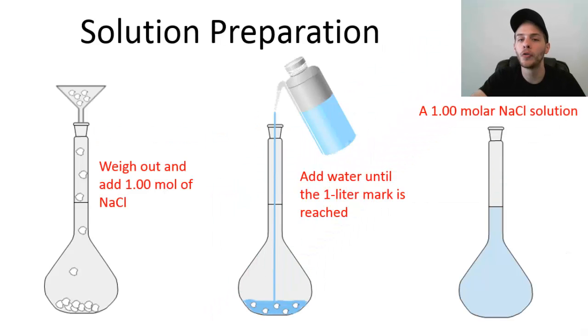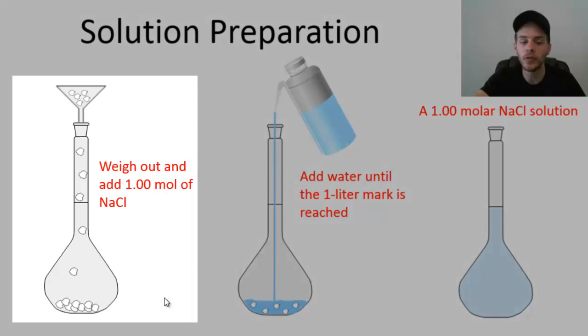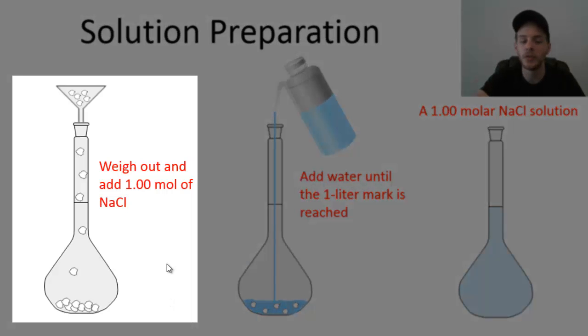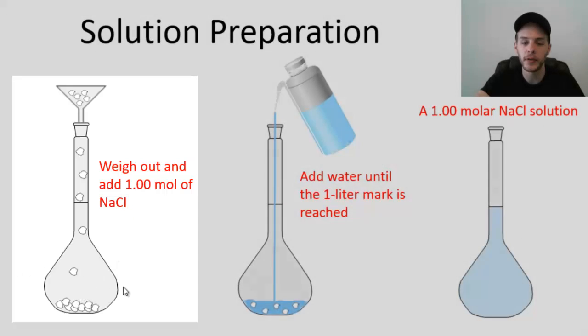So let's talk about how to prepare a solution of a specified molarity. Let's say we're trying to prepare a solution that has one mole of sodium chloride dissolved in one liter of water. This solution would have a molarity of one. We would call this a one molar sodium chloride solution. The first thing you would do is start adding your solute, which in this case would be sodium chloride, to a volumetric flask. You would weigh out one mole of sodium chloride and add it to a volumetric flask.